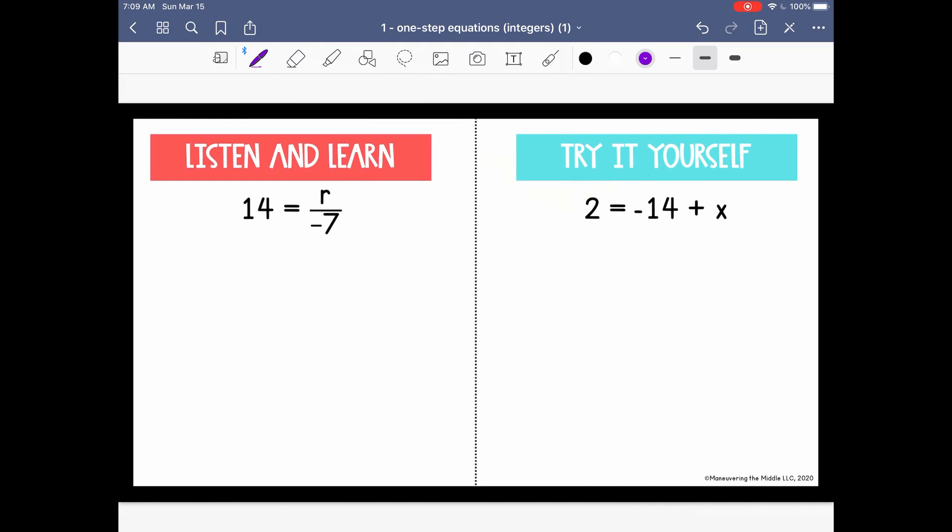Now these look a little bit different because the variable is actually on the right side of the equation. But everything still works the same because we know that an equation has two equal expressions. We can just solve using the same process, focusing on the side of the equation where the variable is. So I have 14 = r divided by 7. I'm going to multiply both sides by -7, and I will have -98 equals r.